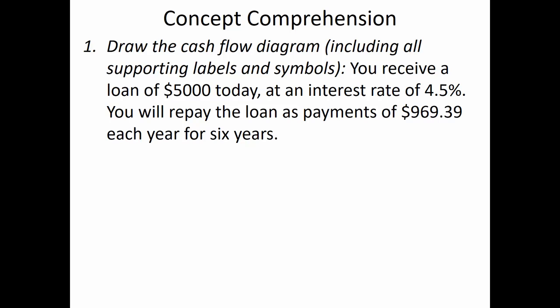At year zero there's a line going up because you get money. The sign convention: a line going up means you're getting money, a line going down means you're spending money. At year zero you're getting P equals $5,000. We label somewhere in this area I equals 4.5%. Then the loan repayment of $969.39 each year for six years — six arrows downward, each roughly the same length. We say A for uniform annual series equals $969.39. This is the graphical representation of that statement.